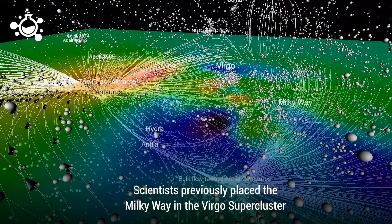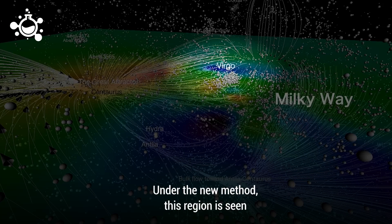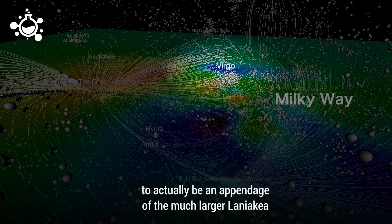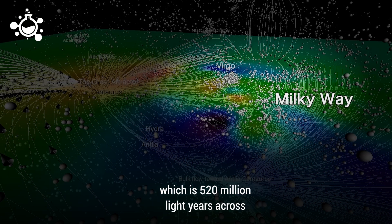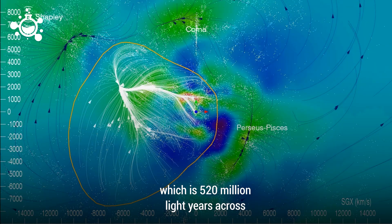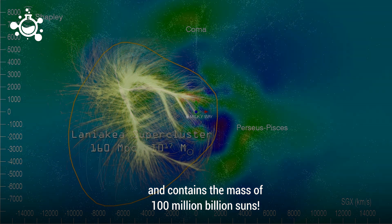Scientists previously placed the Milky Way in the Virgo supercluster. Under the new method, this region is seen to actually be an appendage of the much larger Laniakea, which is 520 million light-years across and contains the mass of 100 million billion suns.